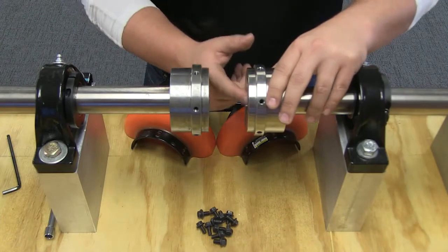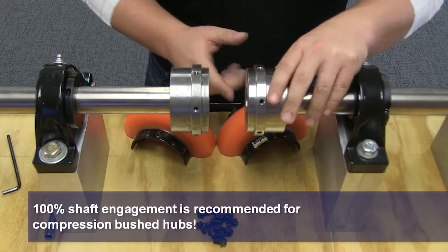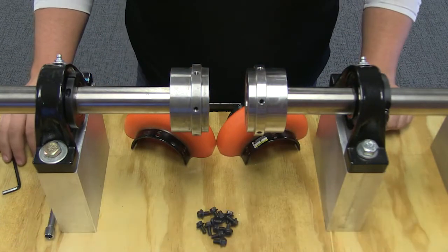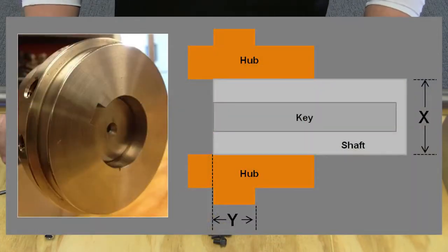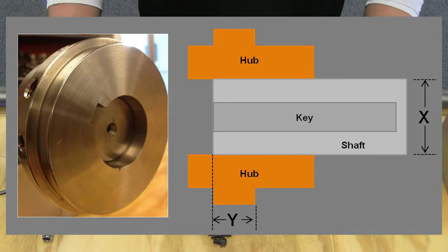You may also overhang the hub off of the end of the shaft, as long as at least 80% of the shaft diameter is covered. Referencing the graphics shown, dimension Y should be equal to or greater than 0.8 times the dimension X.